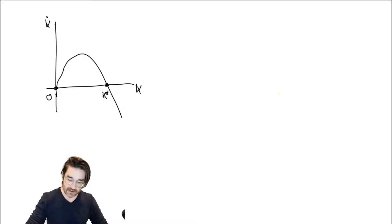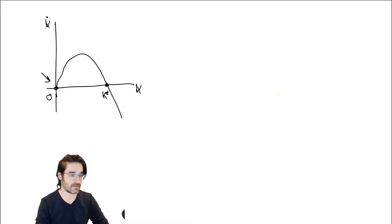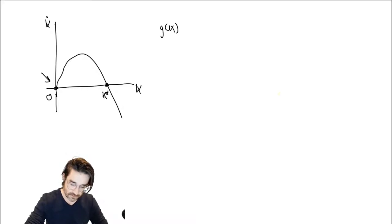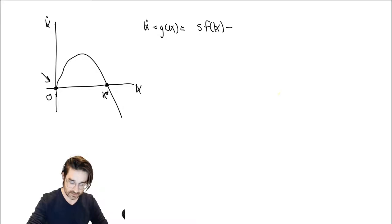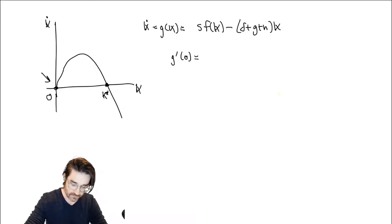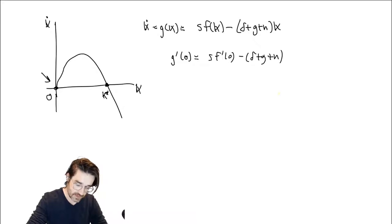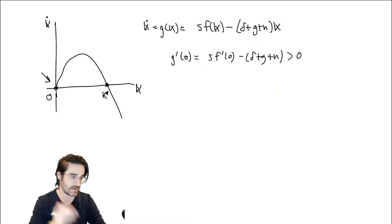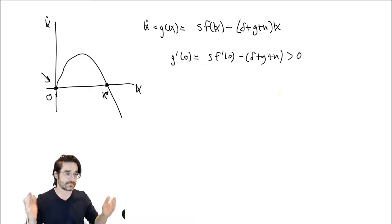For the slope at zero to be positive, you need G prime at zero — which is S times F prime at zero minus (G + N) — to be greater than zero. One way to do that is via the Inada condition where F prime at zero is infinity, or you could just have it being greater than (Delta + G + N) over S. So you may as well just use the Inada condition.